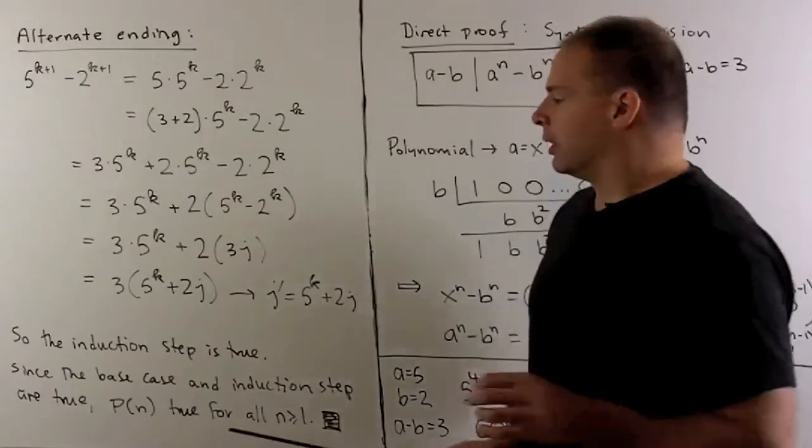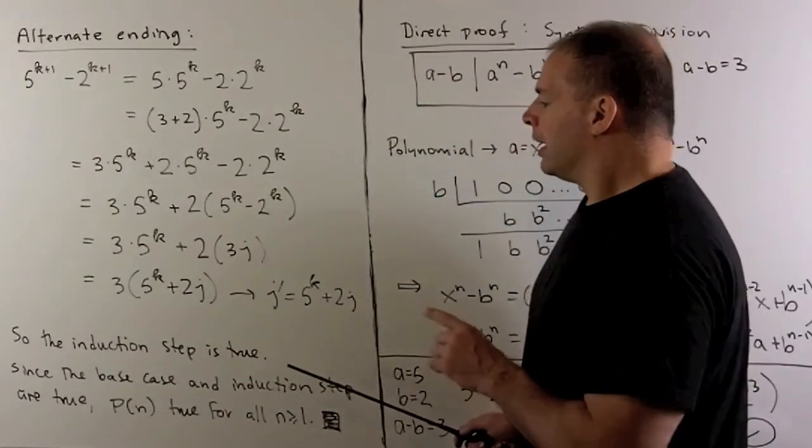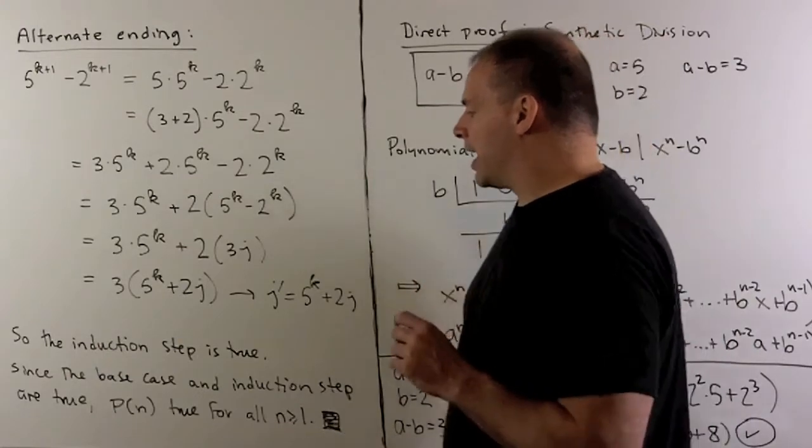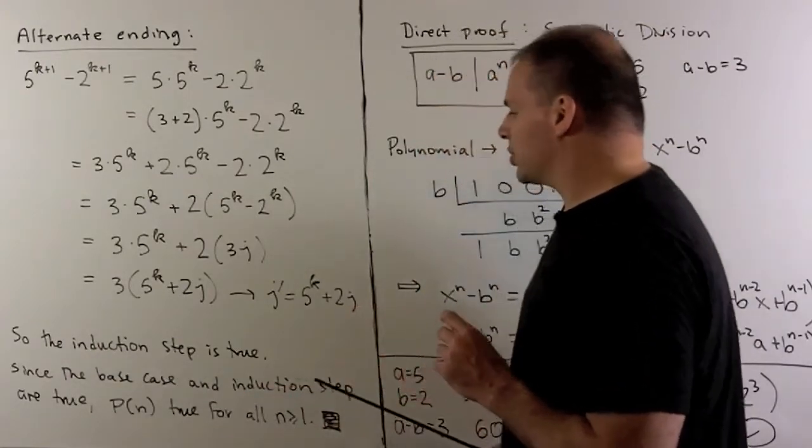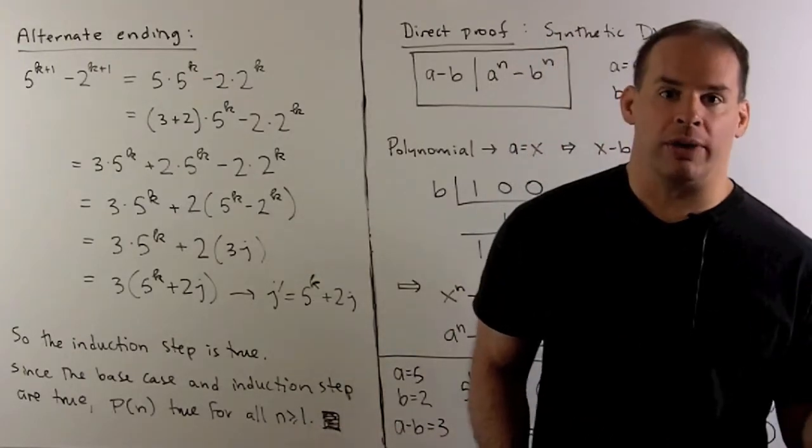To finish up formally, I'll put a statement in saying that the induction step is true. Then, we just say that our proof is done by saying, since the base case and the induction step are true, we're going to have that P(n) is true for all n greater than or equal to 1.